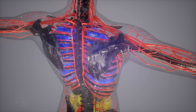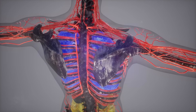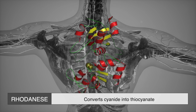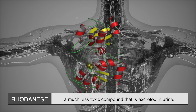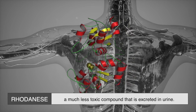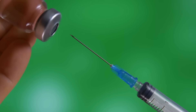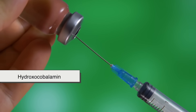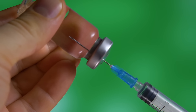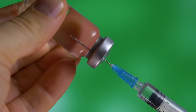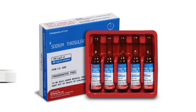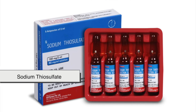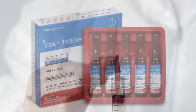The body has a natural way of detoxifying small amounts of cyanide through an enzyme called rhodanese, which converts cyanide into thiocyanate — a much less toxic compound that is excreted in urine. In cases of poisoning, medical professionals use antidotes like hydroxocobalamin, a form of vitamin B12, which binds to cyanide and allows it to be safely removed from the body. Another method involves the use of sodium thiosulfate, which aids in cyanide detoxification. However, these treatments must be administered promptly to be effective.